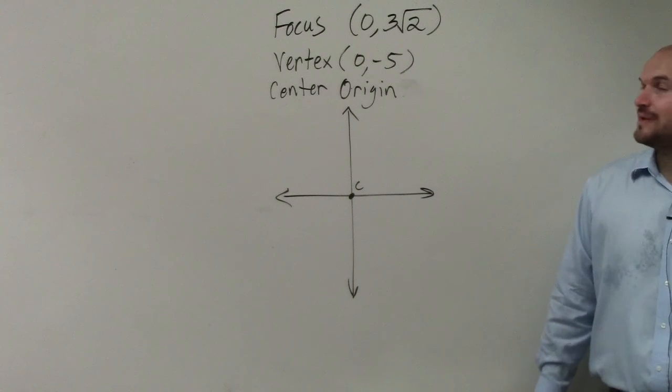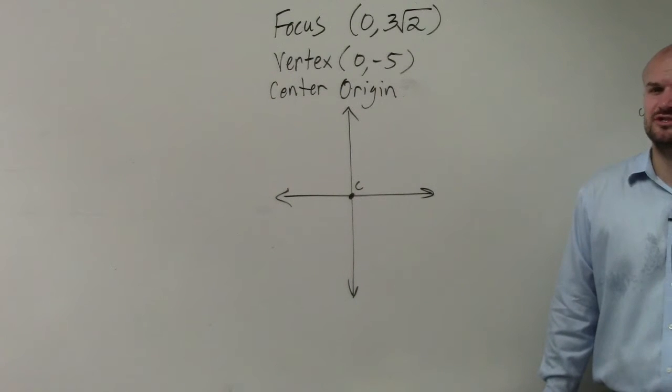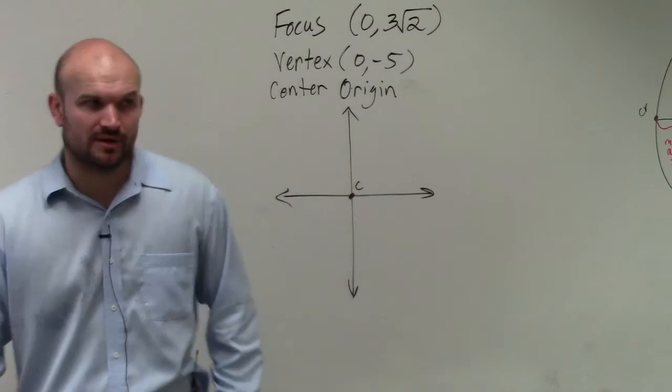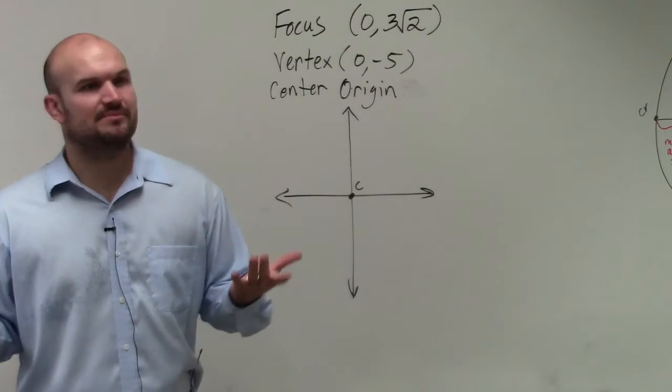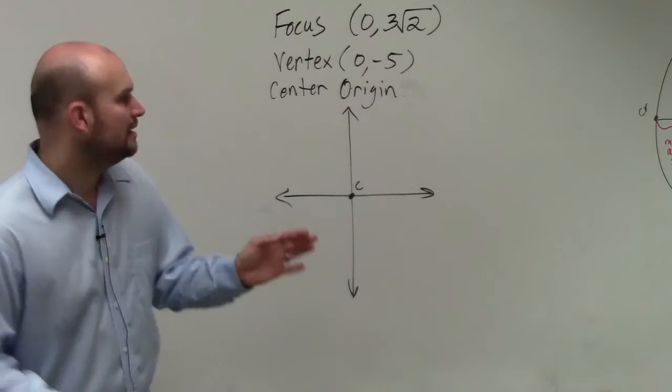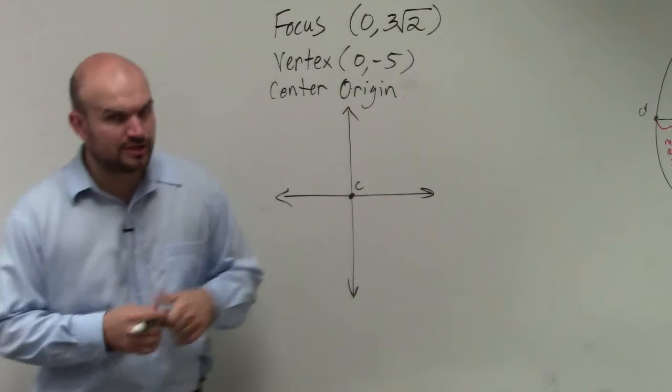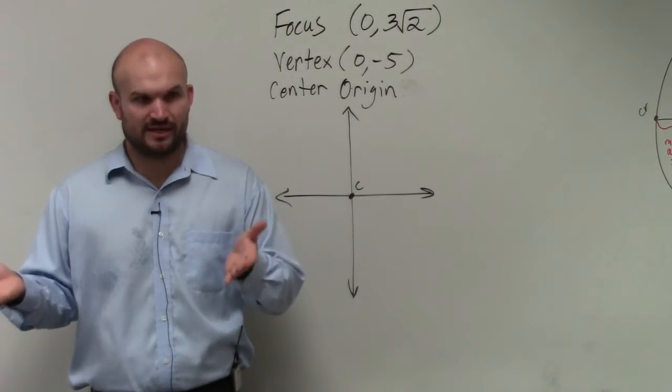Next thing, we need to plot the focus. And I know this is usually when students have trouble. They're like, how am I going to plot a radical number? That's an irrational number. Well, ladies and gentlemen, just your estimation techniques is going to be fine. If you do 3, or let's do square root of 2. Where should the square root of 2 fall between, as far as our numbers?